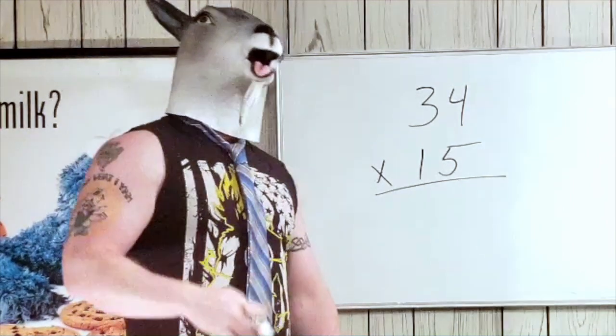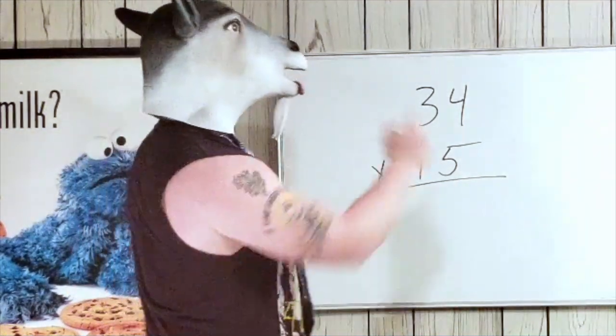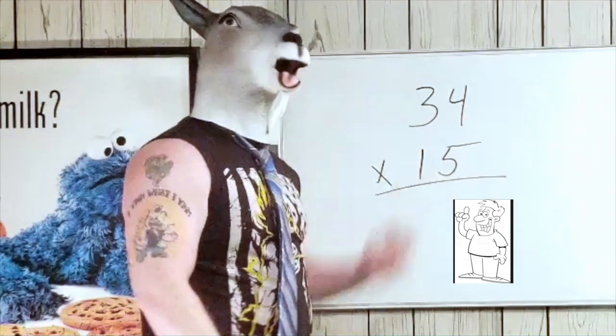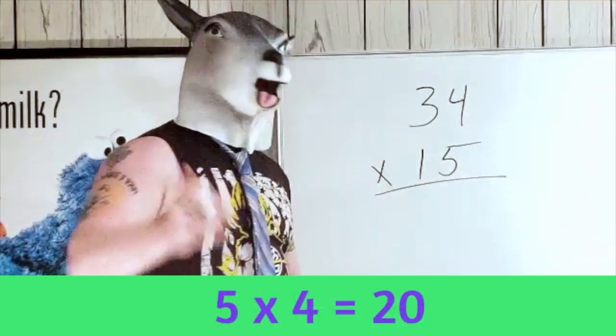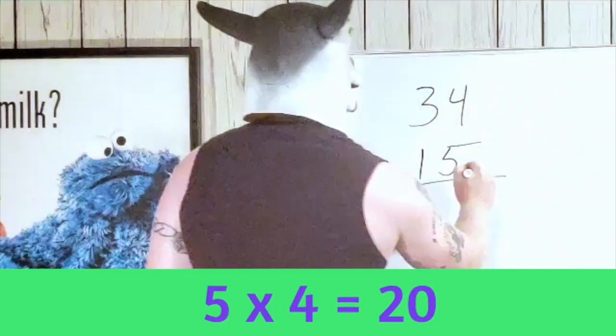Alright, don't worry, I got you. Alright, here we go. Alright, so let's take a look, we got 5 times 4. Remember we start on the right hand side. Okay, so we have 5 times 4. Okay, 5 times 4 is 20, right, so we're gonna put the zero down here.